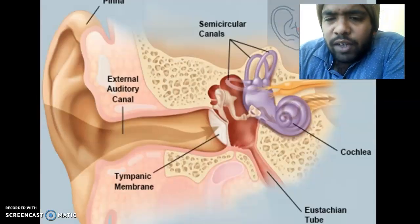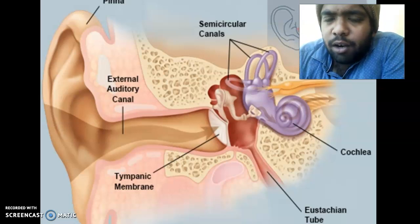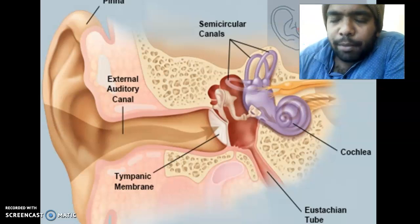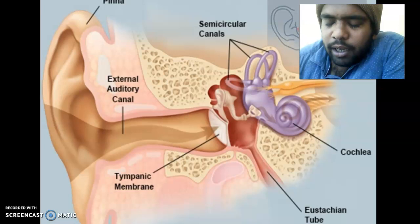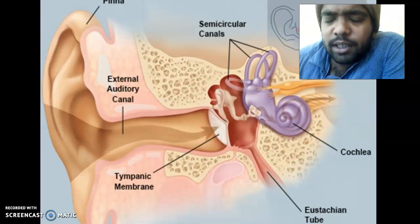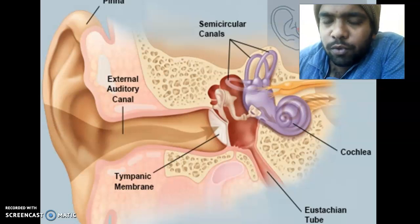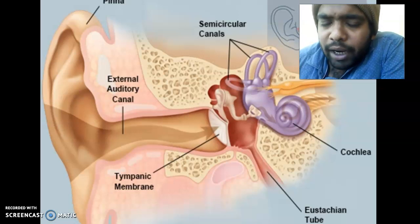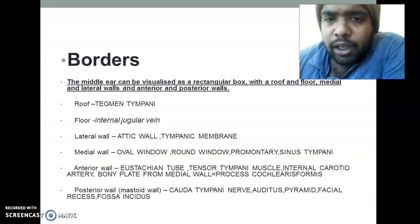First of all, where is the middle ear located? The middle ear is located in between the outer ear and the inner ear. And mainly in this lecture we will be going through the boundaries and the mnemonics used for memorizing the boundaries of the middle ear.